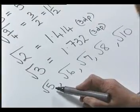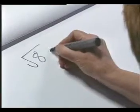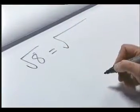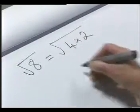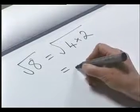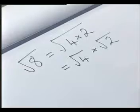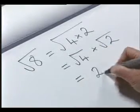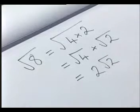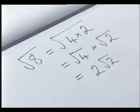Root 2 cannot be simplified any further, neither can root 3, root 5, root 6, or root 7. But look at root 8: if we take the square root of 8, then 8 can be replaced by the product 4 times 2. Now the square root of a product is the product of the square roots, so that's the square root of 4 times by the square root of 2. We know the square root of 4 is 2, and this is root 2, so the square root of 8 can be written more simply as 2 root 2.